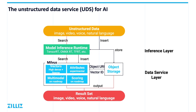Currently, Milvus supports embedding analysis, is developing attribute filtering, and is planning the multimodal and scoring components. The end goal for Milvus is not just to be a high-performance vector search engine — we want to build a comprehensive infrastructure software for unstructured data services.